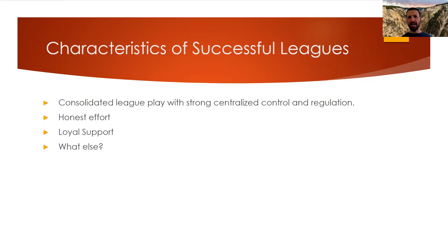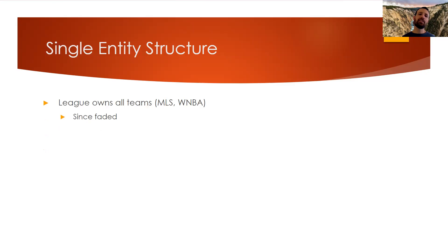Characteristics of successful leagues include consolidated league play, centralized control — think about the NFL with a lot of control in the front office — regulation to ensure honest effort, and loyal fan support. Another characteristic I'd point to is superstars: LeBron James, Michael Jordan — superstars like that drive league success.